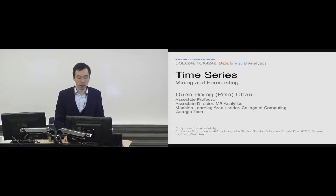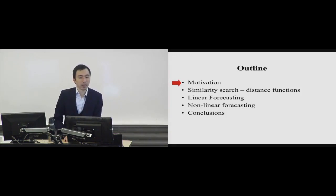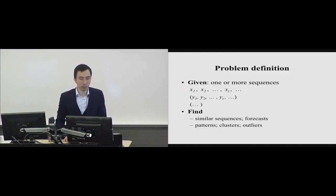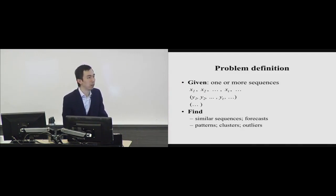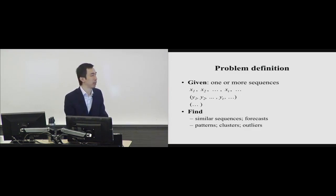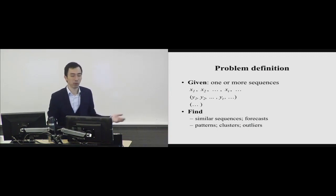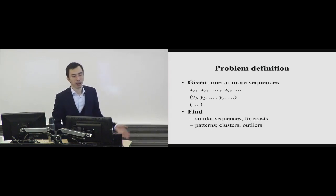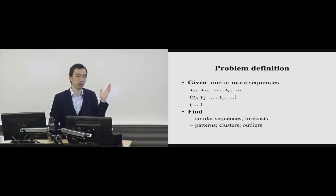Time series is so popular because you can think of anything that changes over time as a time series. It's simply data over time, where each time point could be a single value or a high-dimensional data point. For example, video is a time series of images where each frame is an image. You can represent it with every pixel as one dimension, or apply dimensionality reduction or feature extraction.